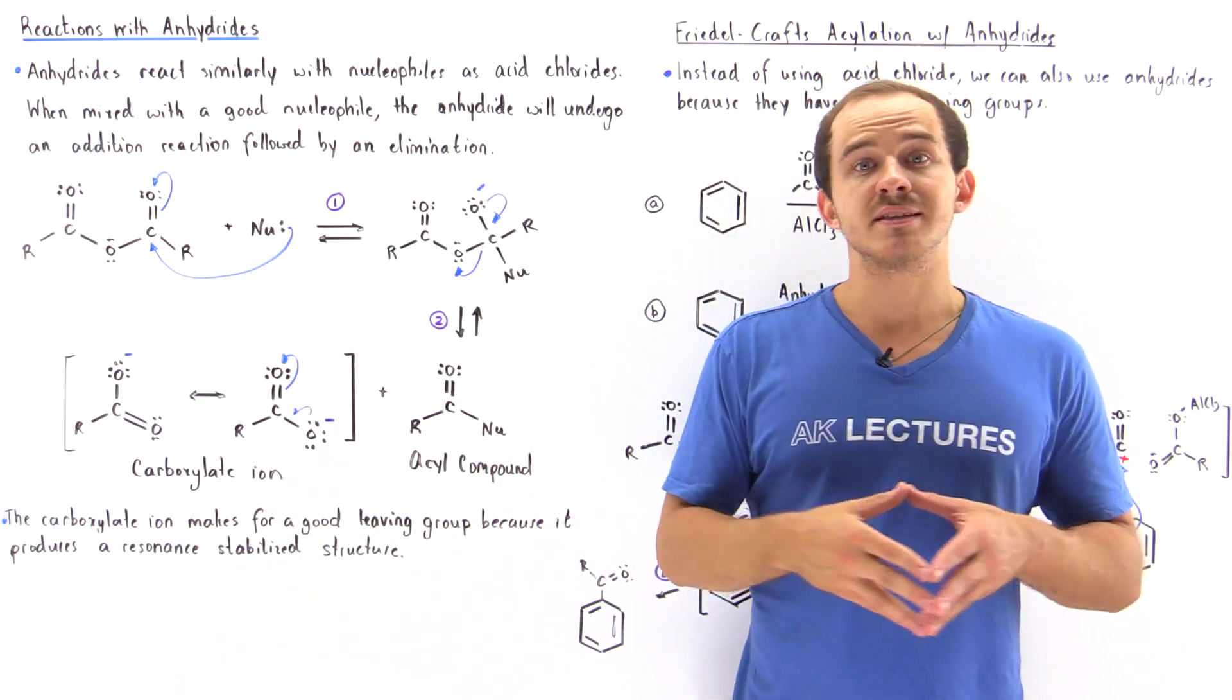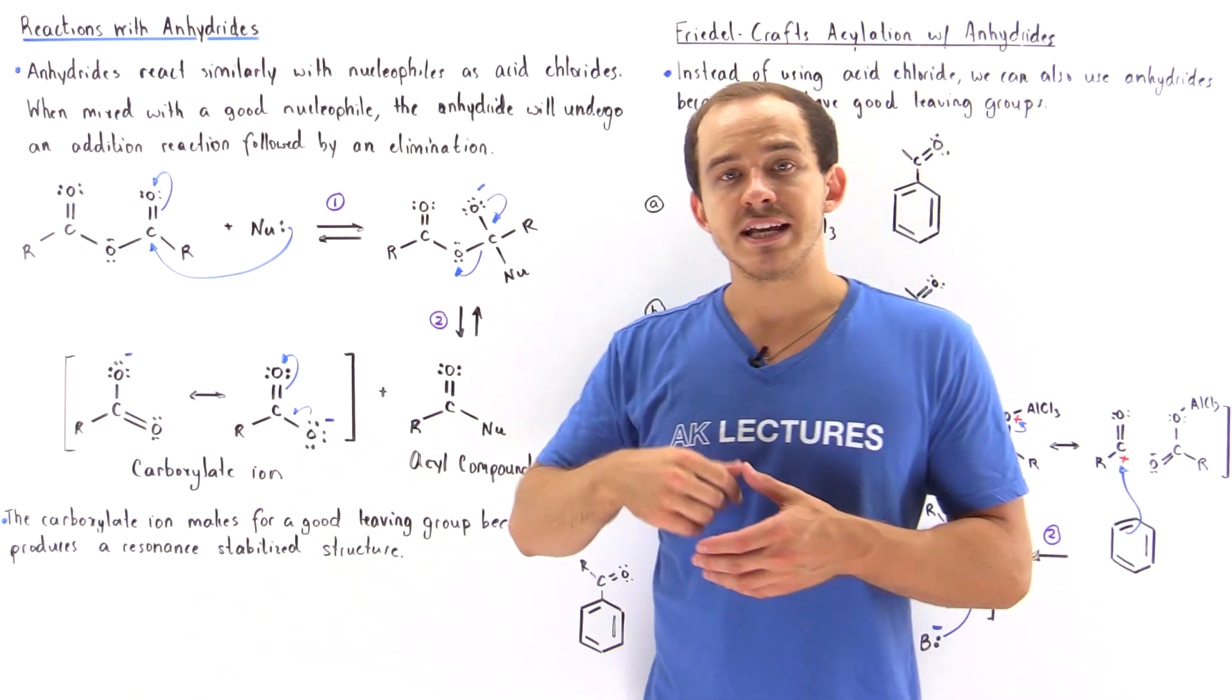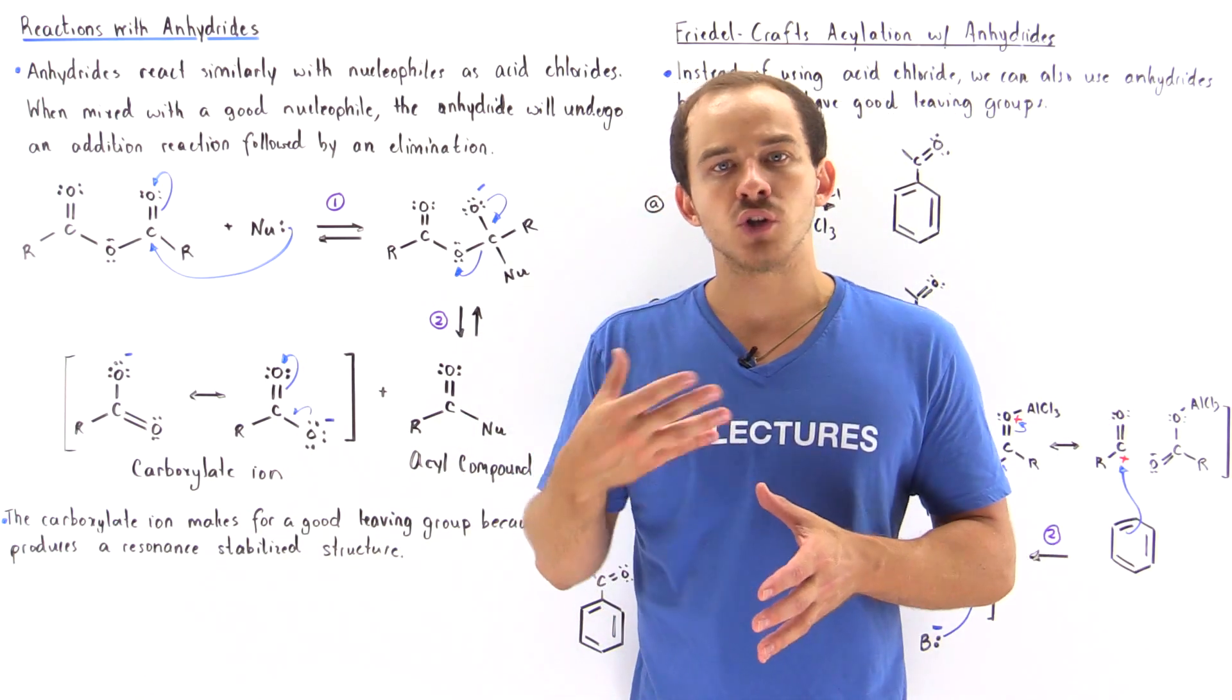The second step is the elimination in which our pi bond is reformed and we kick off the good leaving group, the chloride.